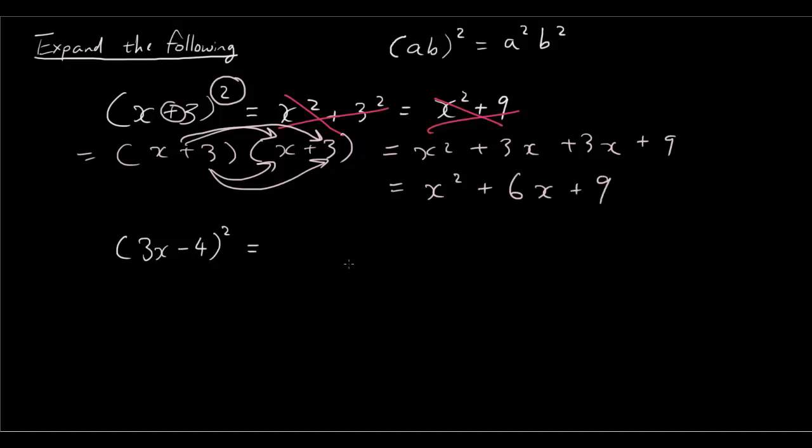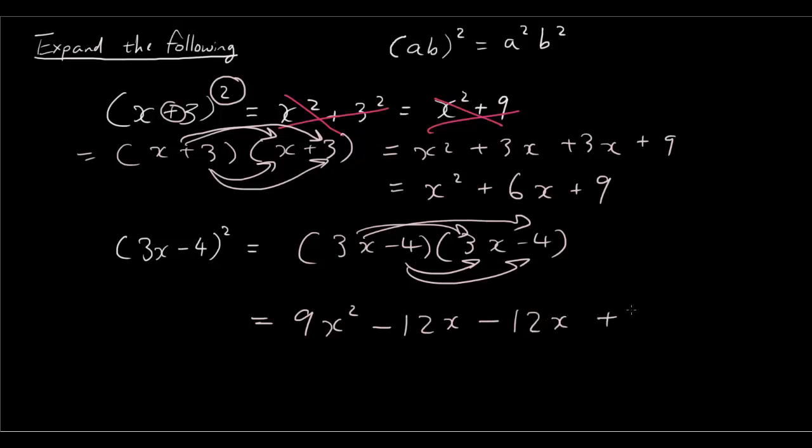All right, try the second one and then come back when you're done. Okay, so that equals 3x minus 4 bracket 3x minus 4, and then draw the arrows. So that gives you 9x squared - 3x times 3x is 9x squared, 3x times negative 4 is negative 12x, negative 4 times 3x, negative 4 times negative 4 is plus 16. So that gives you 9x squared minus 24x plus 16.